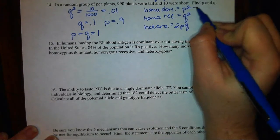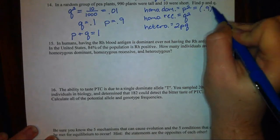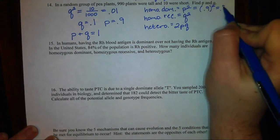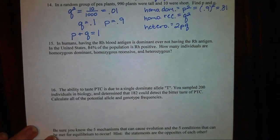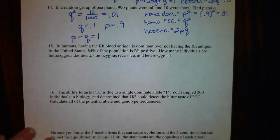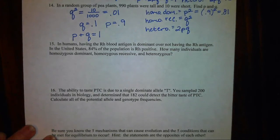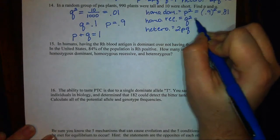Going back to our first group, we know P is 0.9. If we square it, we get 0.81. That tells us that 81% of our population is homozygous dominant.